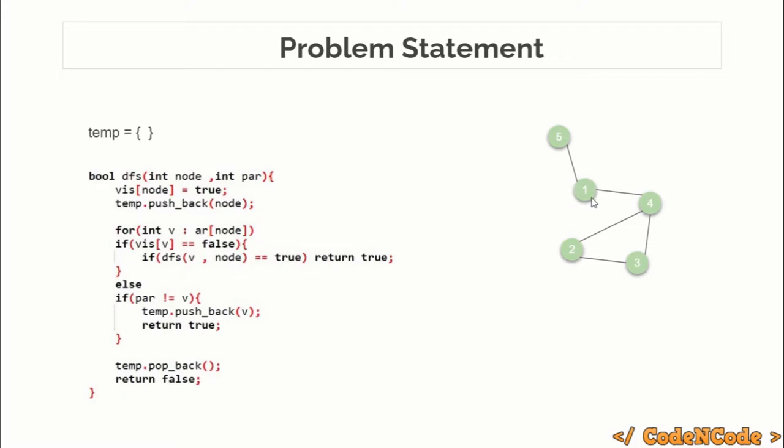Suppose from the main function you made a DFS call to node one. No other node has made DFS call to node one, instead you have made DFS call on node one from main function, so you can pass any invalid number like minus one.